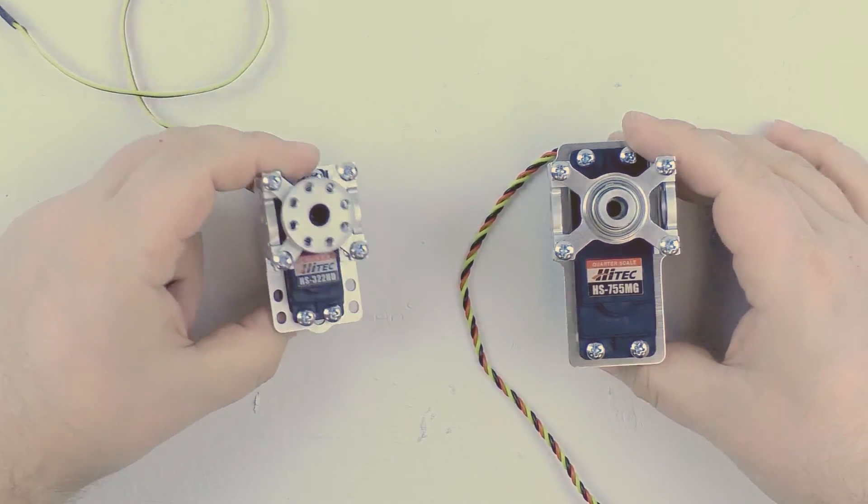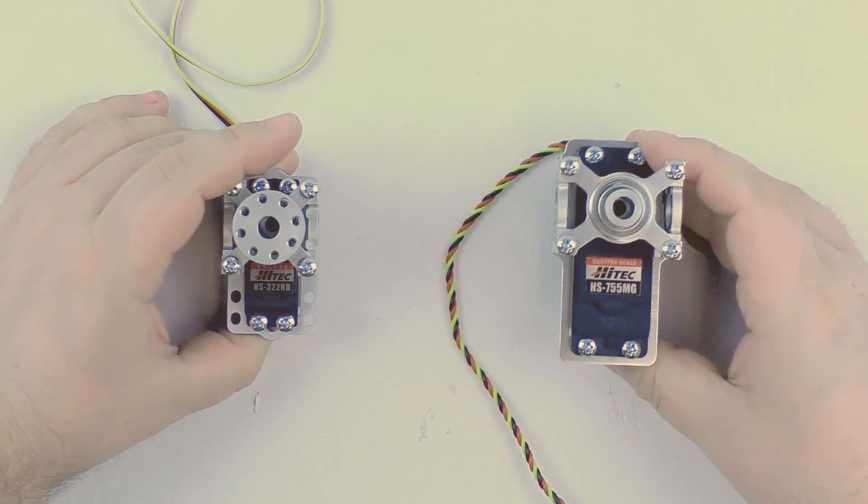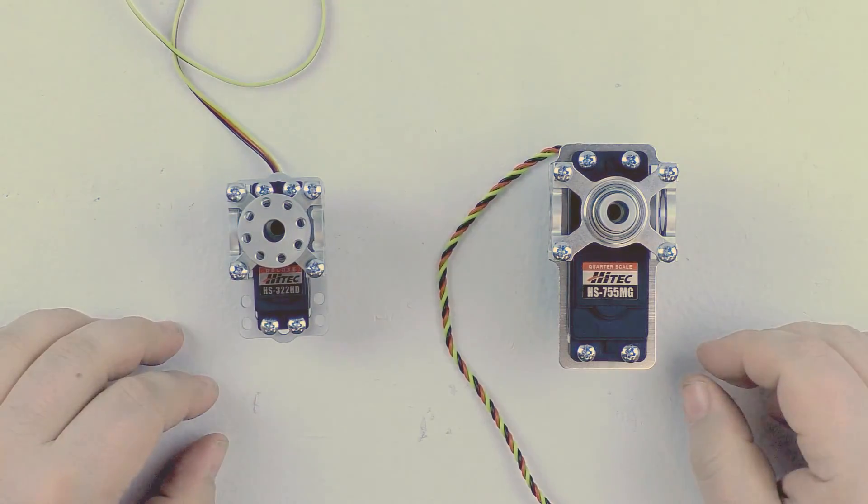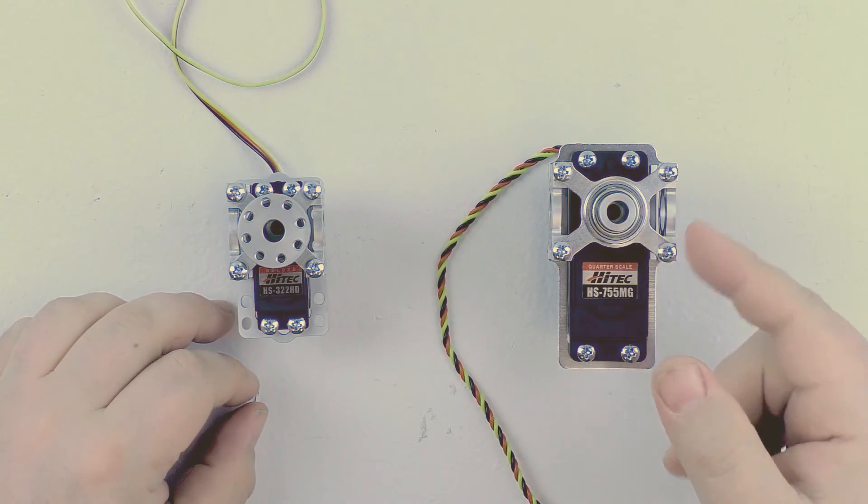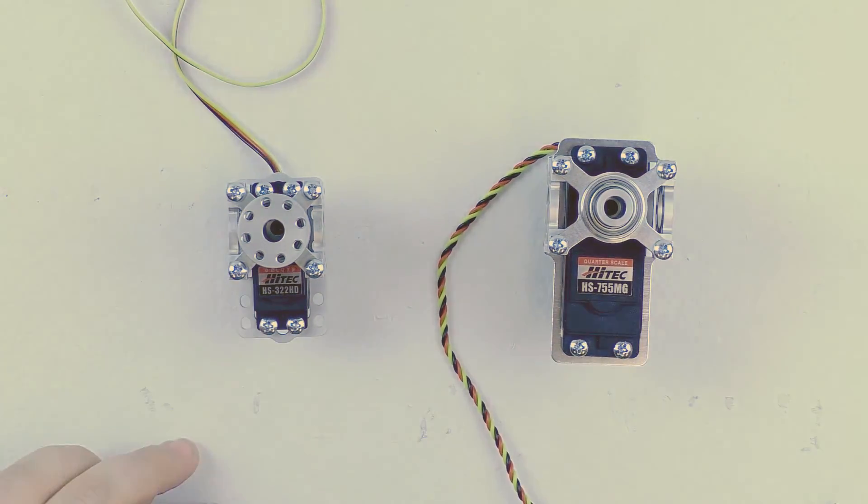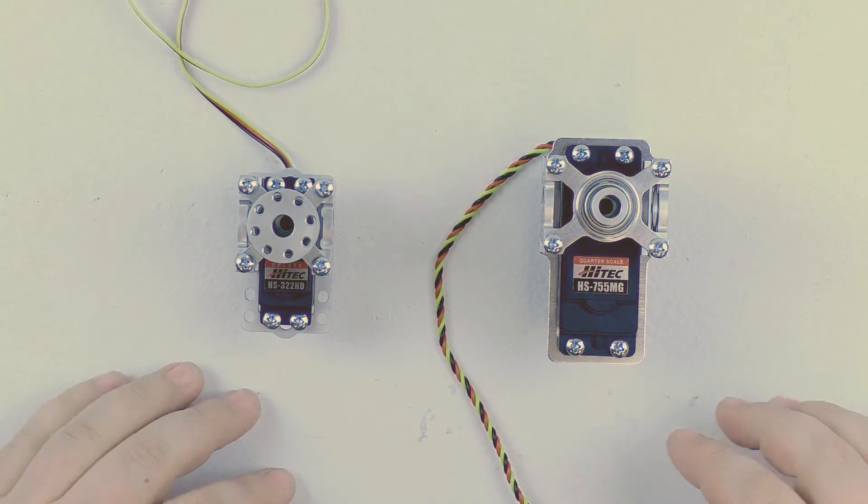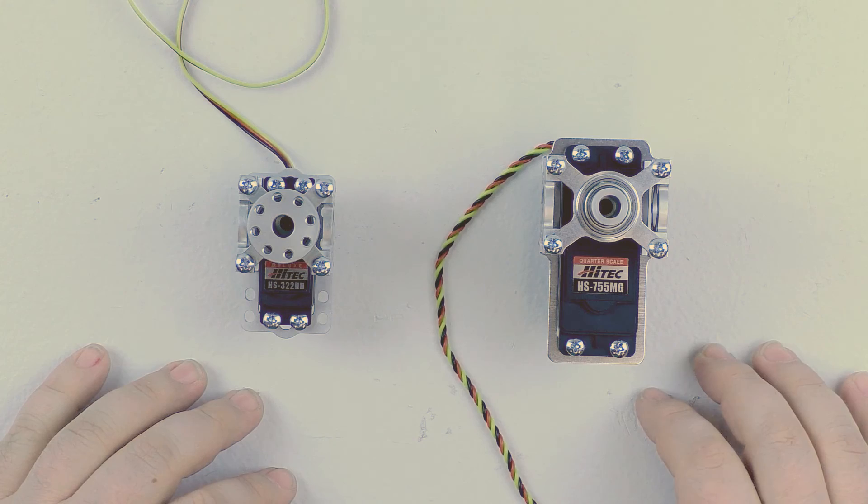All right, so that is a quick video on how to install servo blocks onto both a standard and a quarter scale or large servo. We're going to be producing more videos about doing servo mounting, how to use servos, how to control servos in the coming months. Make sure to stay tuned to our channel for that. As always, if you have any questions, leave us a comment on this video or send us an email at sales at fryprops.com. Thanks.